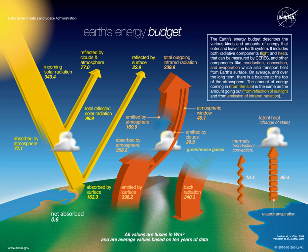Anything that increases or decreases the amount of incoming or outgoing energy will change global temperatures in response. However, Earth's energy balance and heat fluxes depend on many factors, such as atmospheric composition, the albedo of surface properties, cloud cover and vegetation and land use patterns.